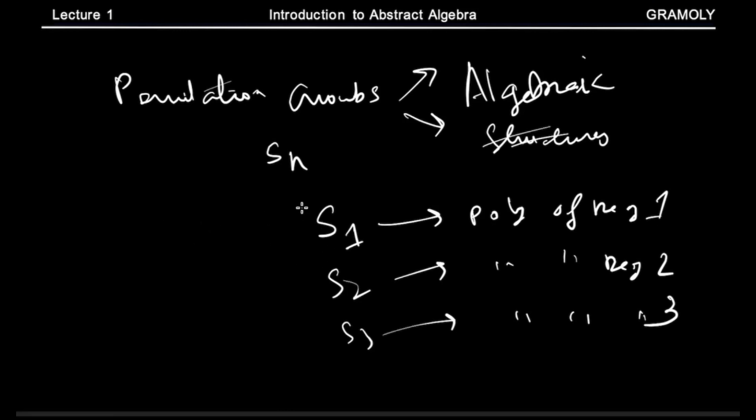Now if the general solution of these polynomials exists depends upon the structure of this permutation group. If the structure is simple there is a general solution, and if it is not there is no general solution. It has been seen that permutation group of size 5 does not have a simple structure like permutation group of size 4, size 3, size 2, and size 1, and therefore there is no solution for polynomials of degree 5.